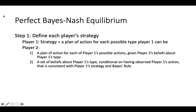The first step to solving for the perfect Bayes-Nash equilibrium of a signaling game is to define each player's strategy. For player 1, a strategy will be a plan for each of player 1's decision nodes. Since each of player 1's decision nodes corresponds to a different type for player 1, player 1's strategy is a plan of action for each possible type that they can be. Player 2's strategy is more complicated — it must consist of two parts. The first part is a plan for what to do at each of player 2's information sets. Since each of these information sets corresponds to a different action by player 1, this part of the strategy is a plan for what to do for each of player 1's possible actions.